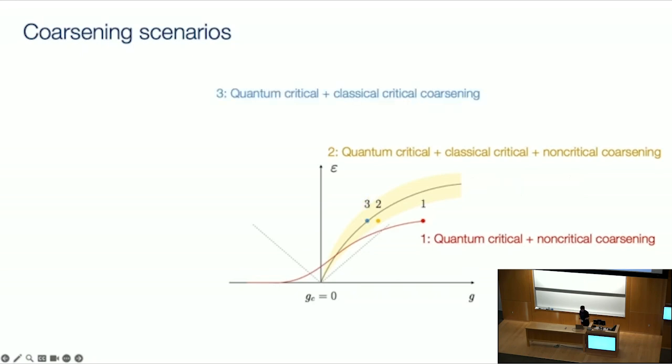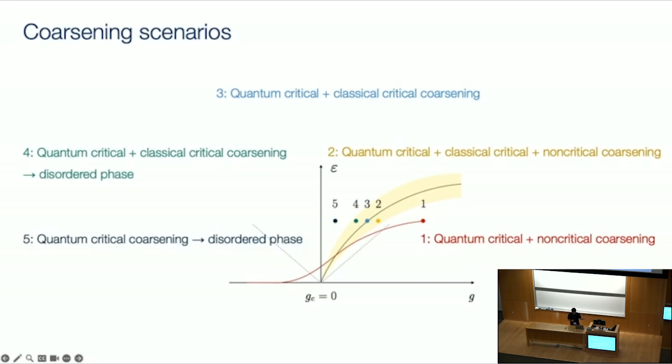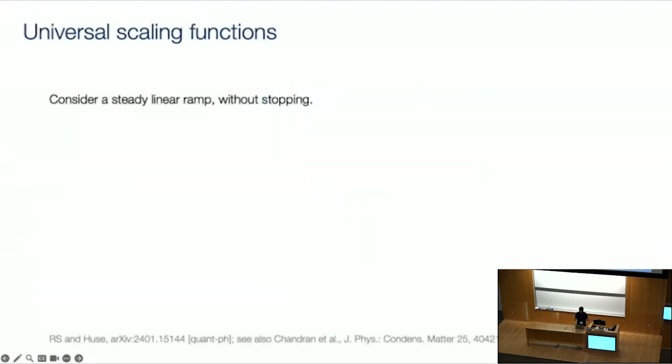So every ramp protocol can be understood from a combination of these three building blocks. And so we can stop the ramp at different positions. So, for instance, if I stop right at the phase boundary, this classical critical coarsening can go on without end. If I inject too much energy density, then I stop in a regime where I'm not even in the ordered phase, and then I'll equilibrate to the disordered phase, and there can be different scenarios. So, but even if the details are confusing, what I want you to take away is that any ramp you can do, it can be very fast, it can be very slow, any ramp has to fall into one of these five categories. And if you understand how these five categories behave, you can understand all your dynamics across the quantum phase transition.